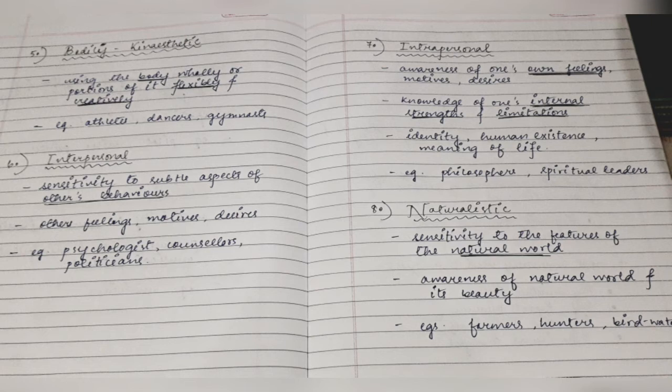The sixth is Interpersonal Intelligence. It is the sensitivity to subtle aspects of others' behaviors. When you interact with the person in front of you, you can observe their feelings and behavior very well. While talking, you are able to observe their verbal responses, body language, and understand their emotions — how they are feeling at that time.